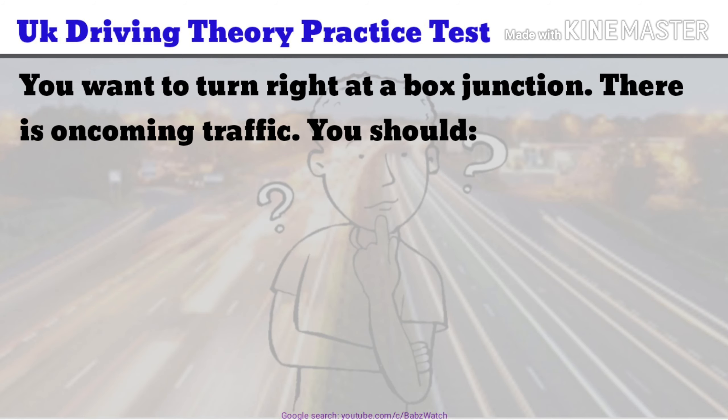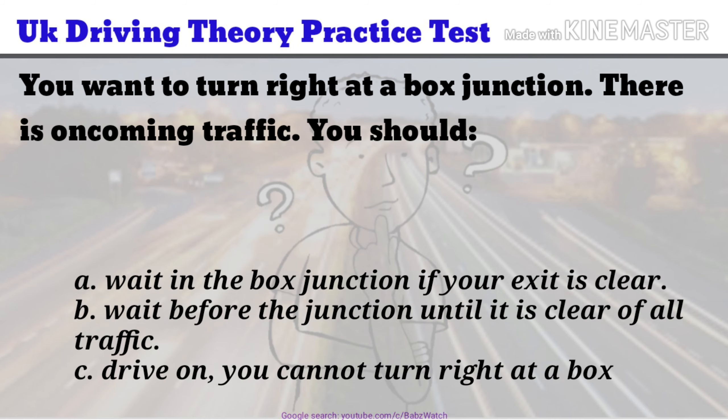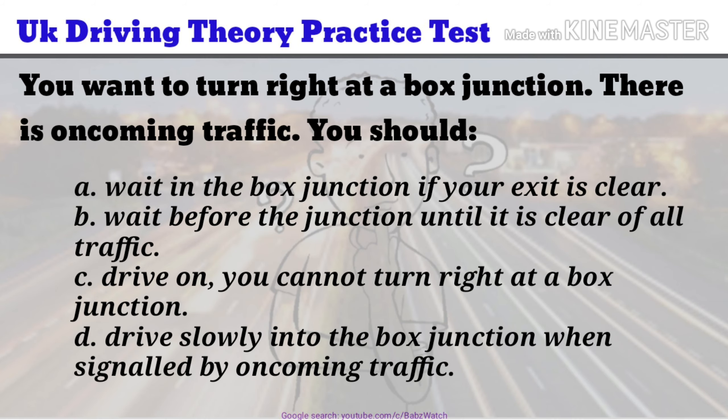UK Driving Theory Practice Test Question 7 of 50. You want to turn right at a box junction. There is oncoming traffic. You should: a. Wait in the box junction if your exit is clear. b. Wait before the junction until it is clear of all traffic. c. Drive on — you cannot turn right at a box junction. d. Drive slowly into the box junction when signalled by oncoming traffic. The correct answer is a.